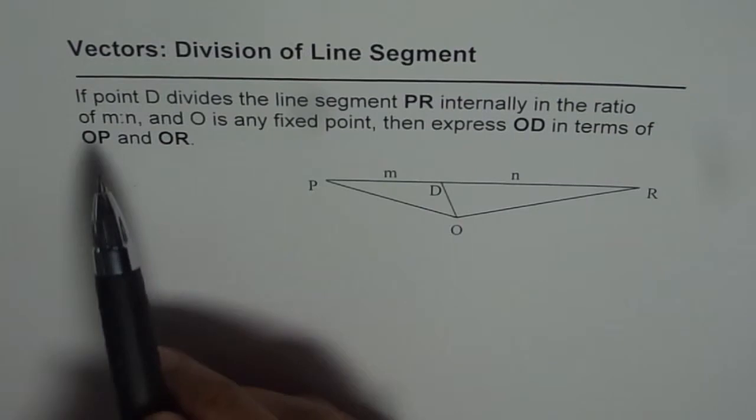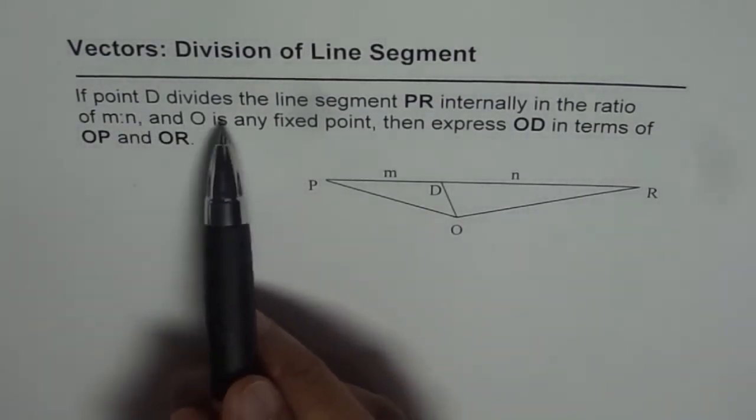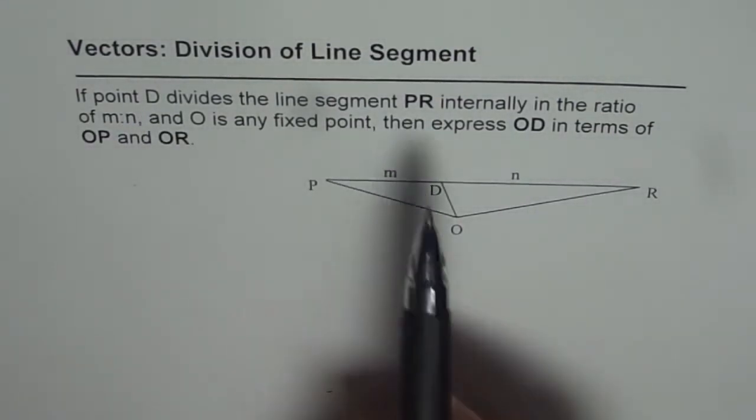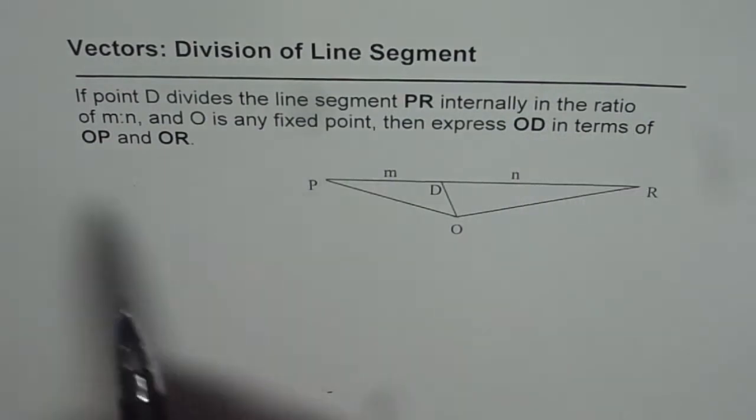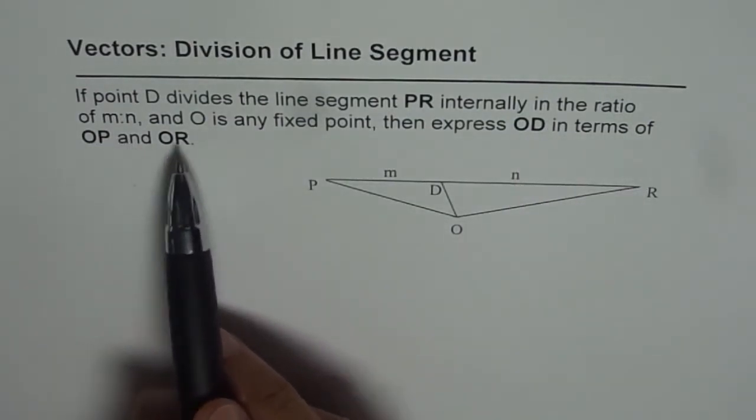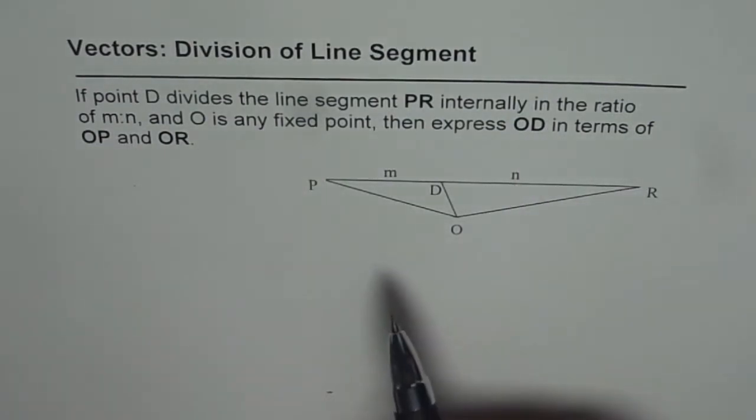The question here is if point D divides the line segment PR internally in the ratio of M is to N and O is any fixed point, then express OD in terms of OP and OR.